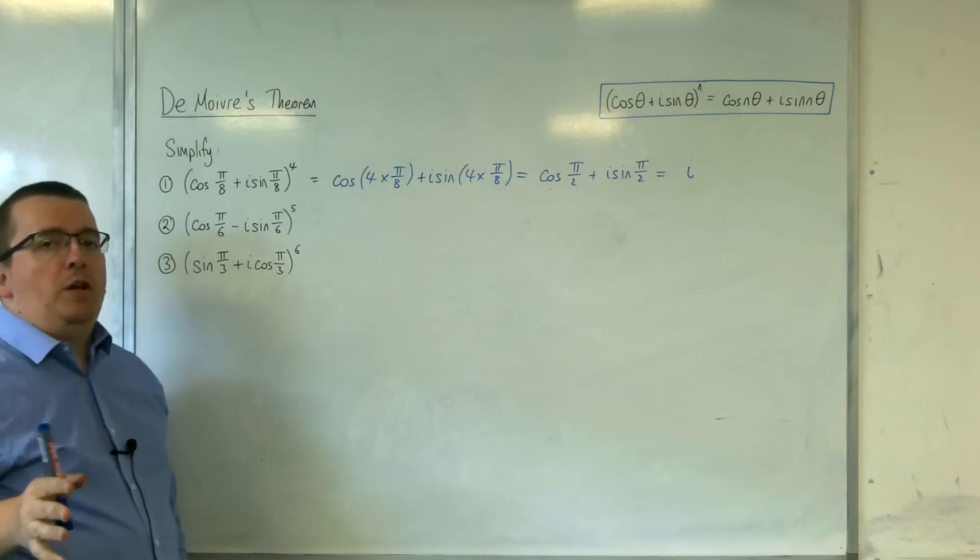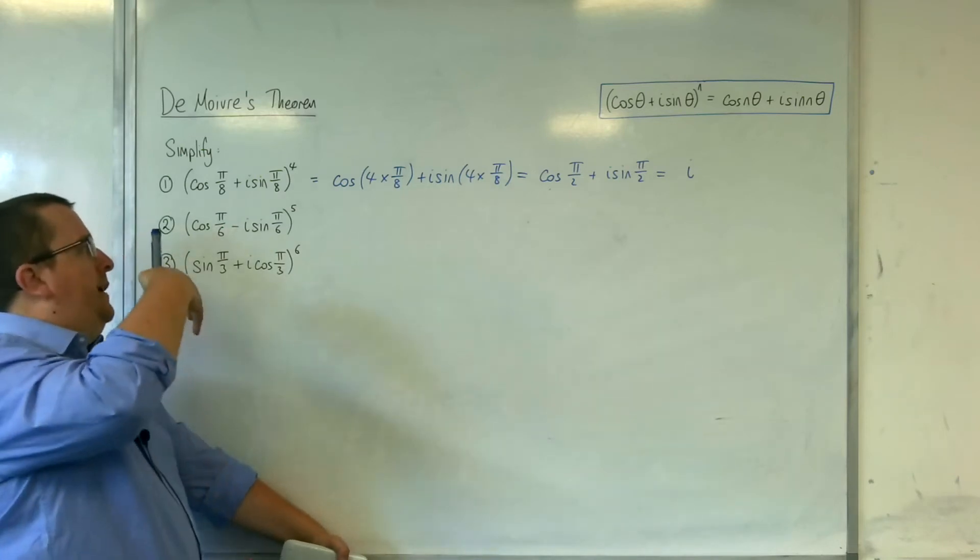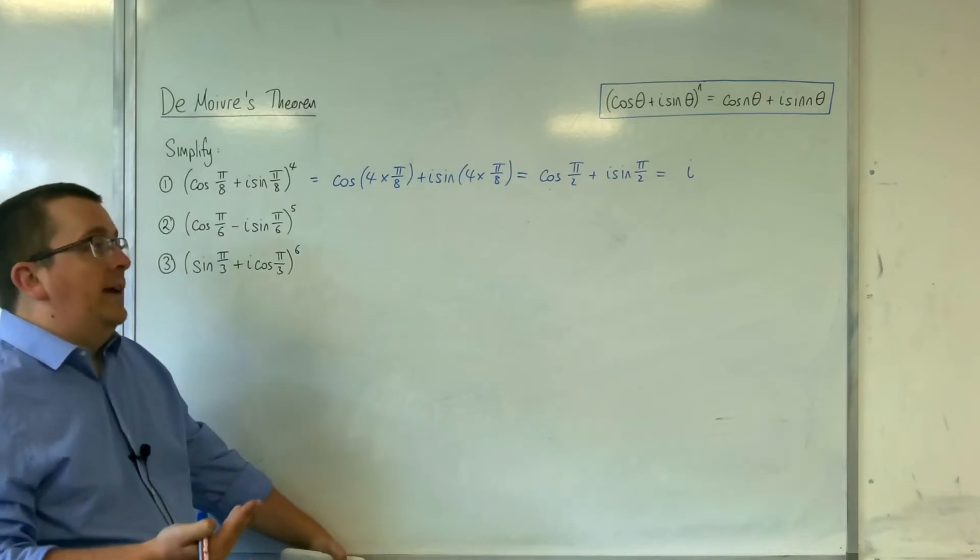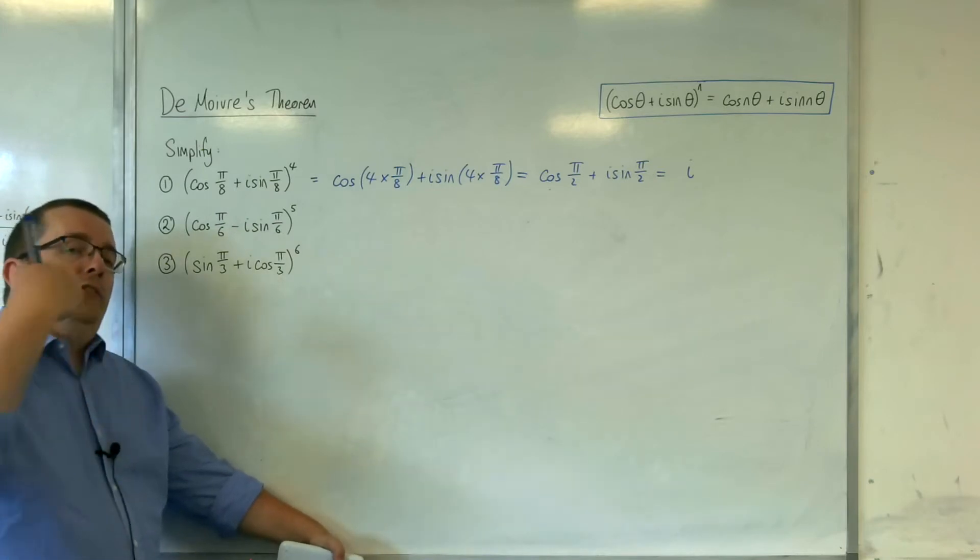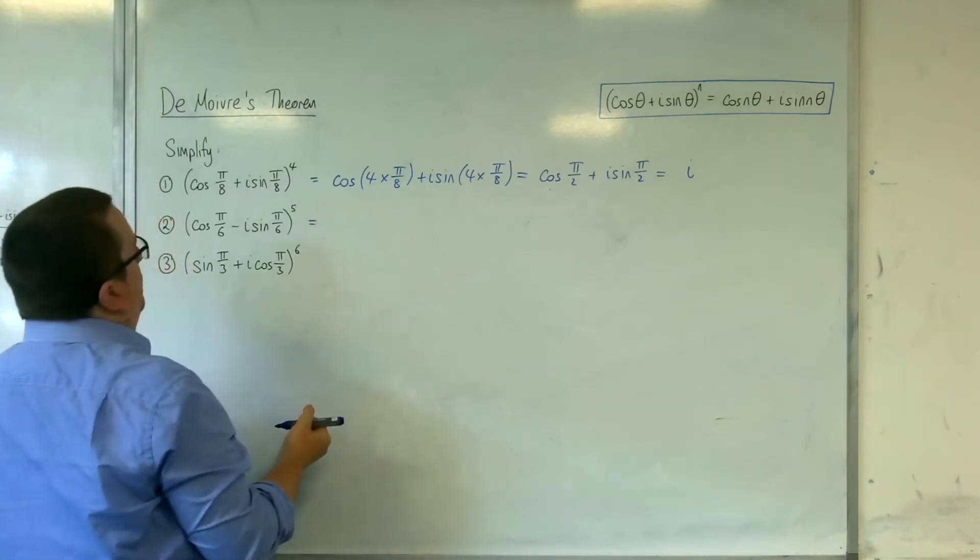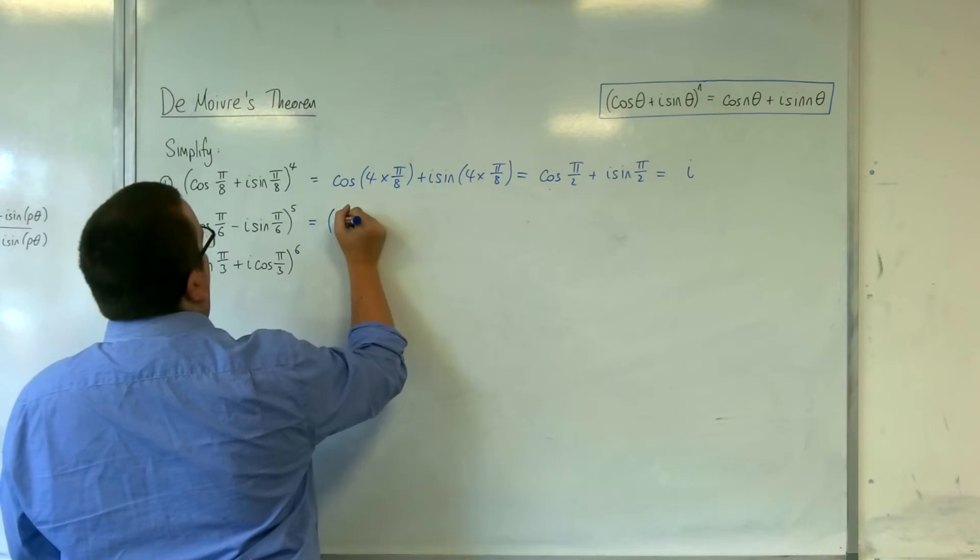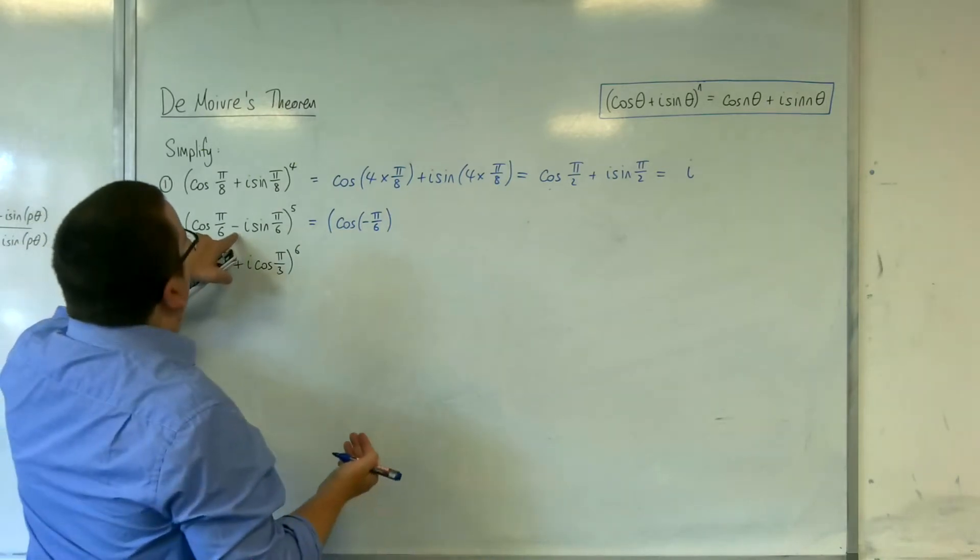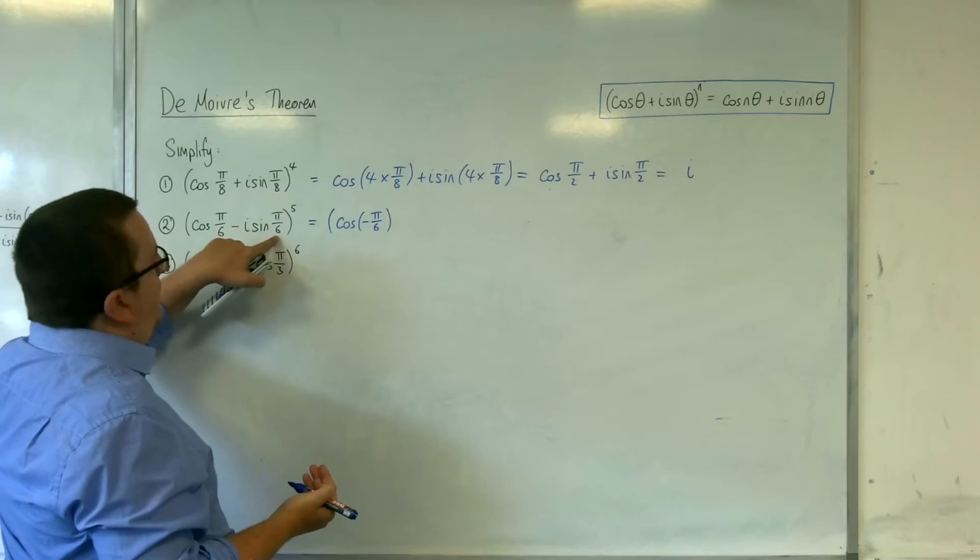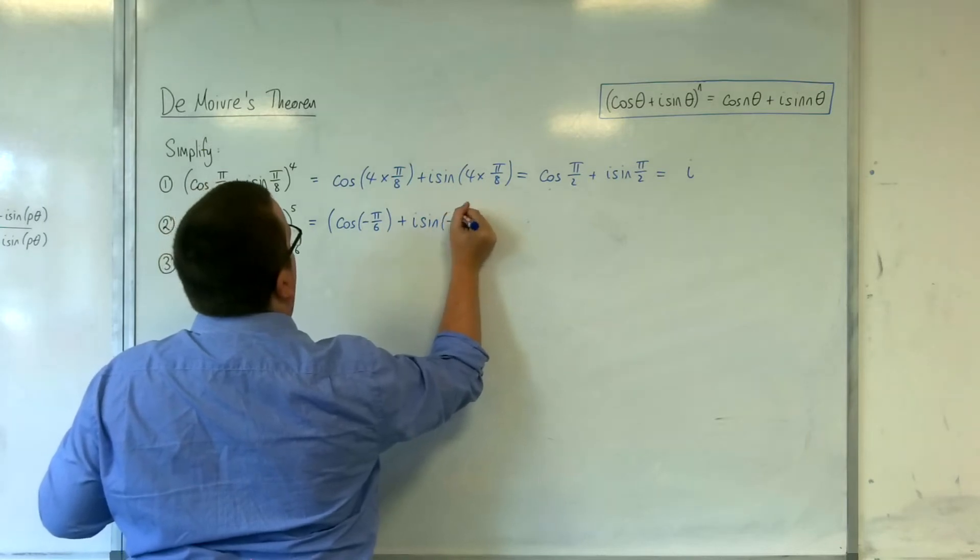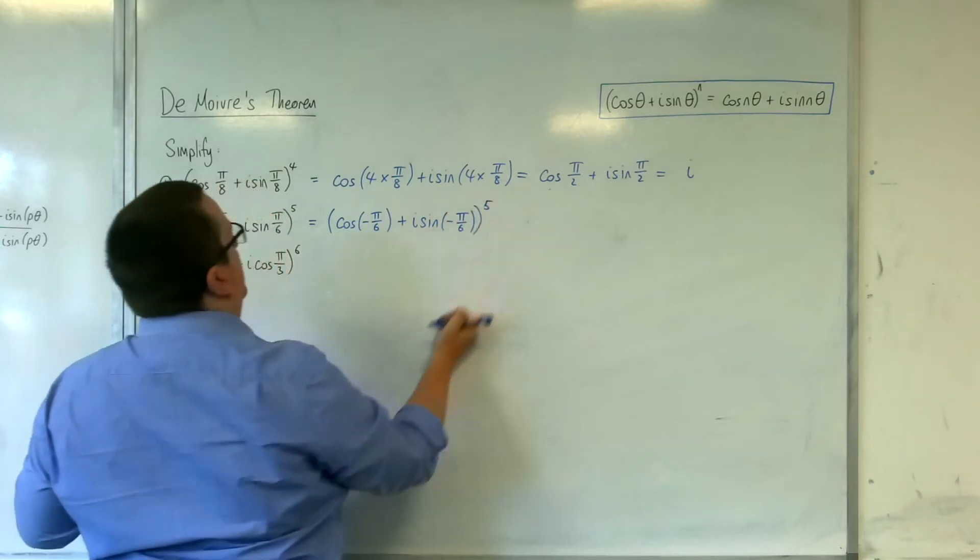If you'll remember back to the previous video where I proved the formula for negative integer values of n, I use the fact of cosine being an even function and sine being an odd function. So what I can do here is say to myself, well cosine of π over 6 is precisely the same as cosine of minus π over 6. And likewise, if I bring the minus sign in here because sine is an odd function, I have plus i sine of minus π over 6 to the power of 5.